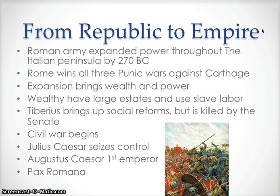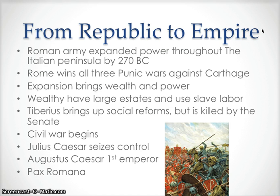The big issue is who should hold the power — the Senate, or the popular political leaders, the war leaders, the generals, who are looking to enact reforms that will be more fair to them. Rome becomes occupied in a civil war. A man named Tiberius and his brother brought up social reforms to reduce the power of the wealthy, but they were attacked and killed by hired goons from the Senate. This is what started the Civil War, during which Julius Caesar seized control. He was then betrayed and killed by the people in the Senate, and his descendant Augustus Caesar was named the first emperor.